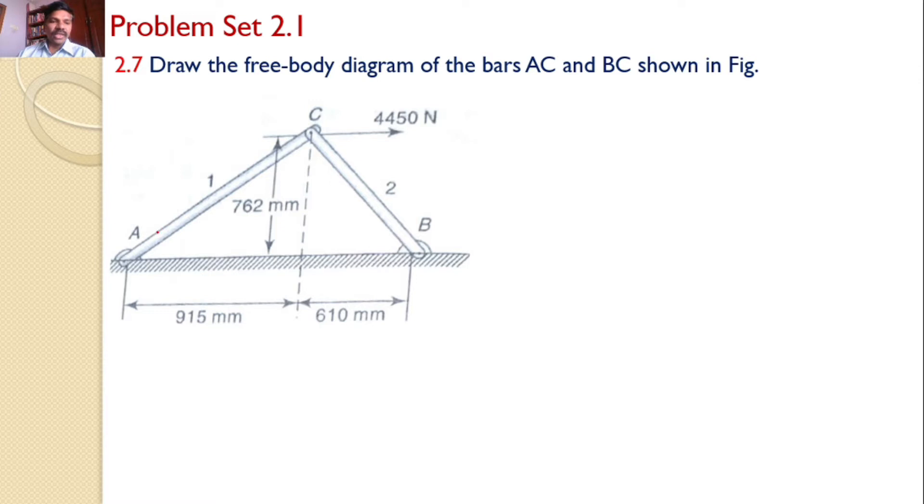Now in this problem, AC and BC are connected at C and a horizontal force of 4450 Newtons is acting at C. At A it is fixed, and at B also it is fixed. Various dimensions are given.